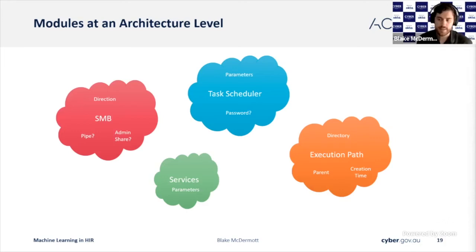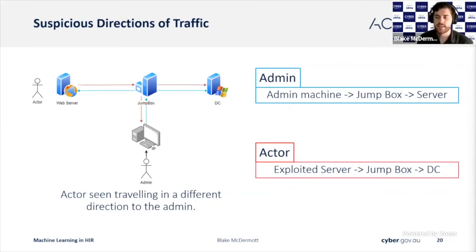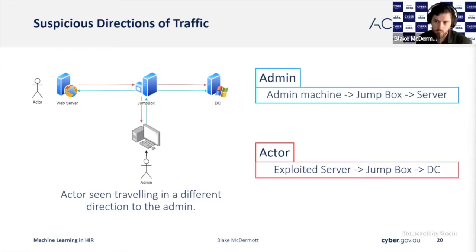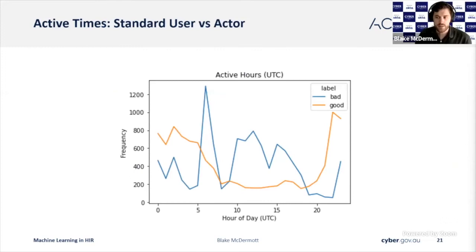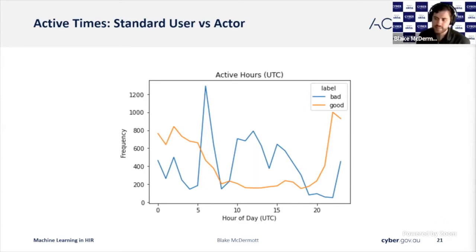Actors often use these tools differently than a standard sysadmin, which can be enough to trigger an alert. A common example is how actors and sysadmins move throughout a network. Admins often go from their workstation to a jump host and then onwards to other servers. An actor, most commonly these days, will come in through web exploitation and then move backwards through a network — we'll see a completely unexpected direction of traffic. Despite the common media perspective, most actors actually hack as a nine-to-five. This can create anomalies within active hours on the network — if we've seen a sysadmin account suddenly active on a web server at 10pm at night, that would stand out.